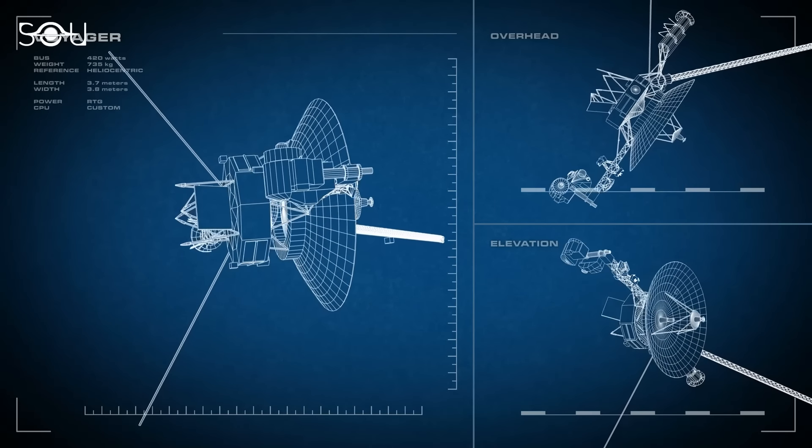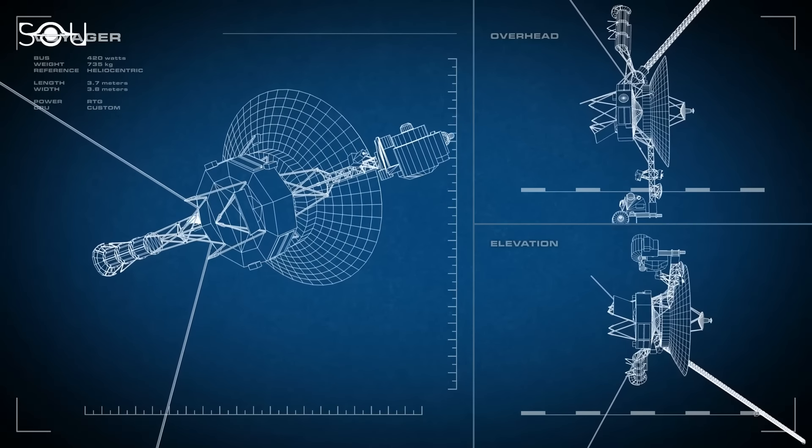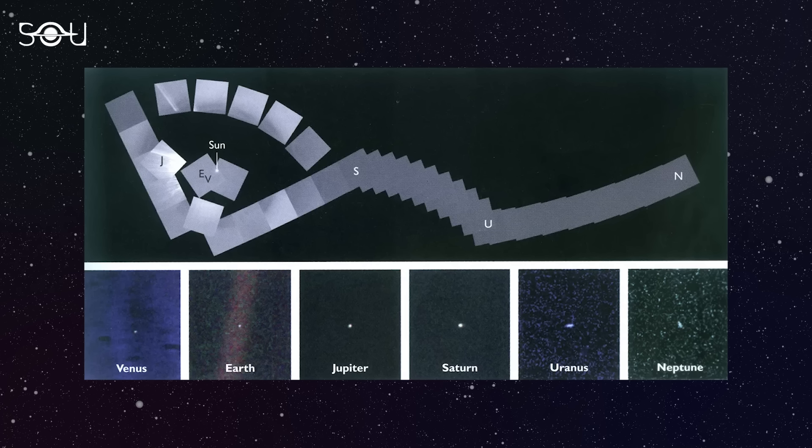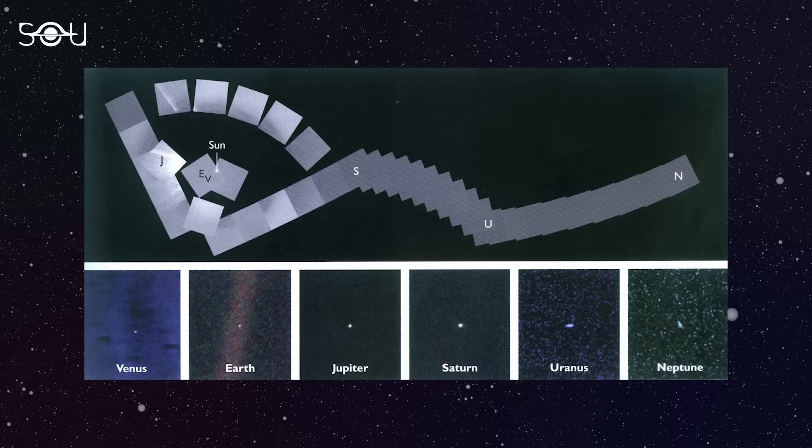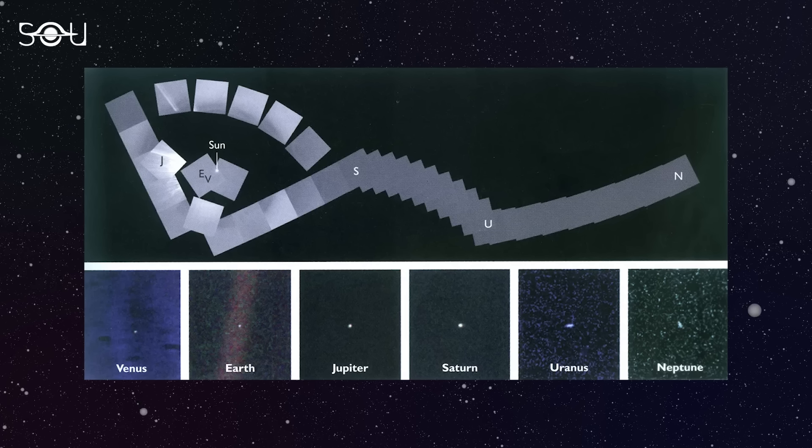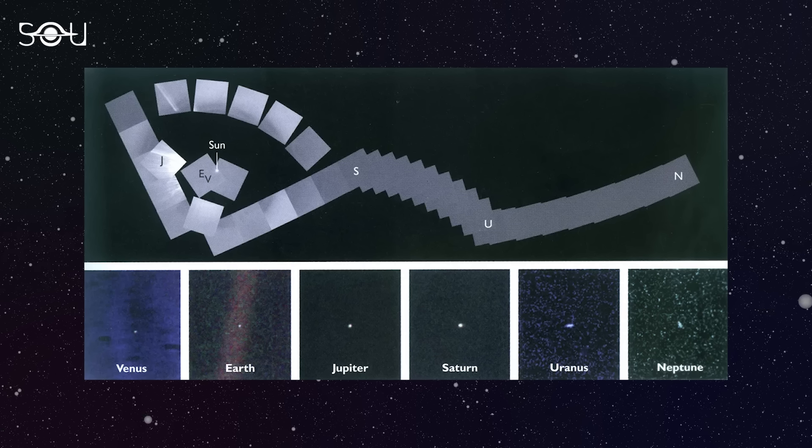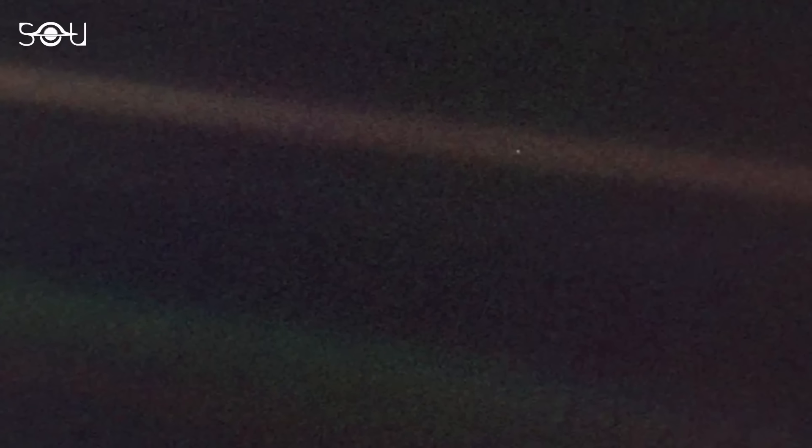As this happens, the team behind Voyager 1 has to make tough choices about which parts of the probe to keep running. The last picture taken by Voyager 1's cameras was part of the family portrait series of images of the solar system, which were captured on February 14, 1990.